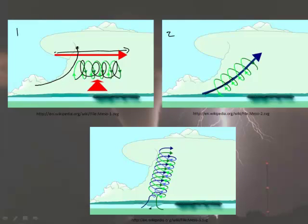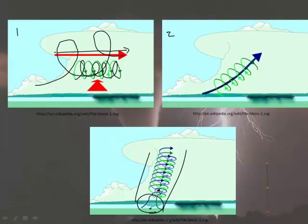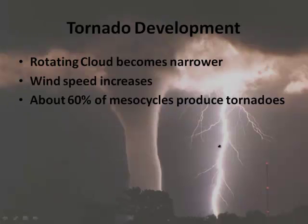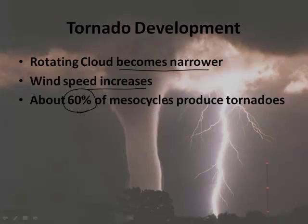Usually it starts out really wide, and then it starts to narrow. As it narrows, the speeds of the winds pick up, and you can get a tornado down here. You get this narrow band, it starts to rotate. The rotating cloud becomes narrower, the wind speed increases. Now if you have a mesocycle, about 60% of the time you're going to make a tornado. The other 40% doesn't make a tornado.